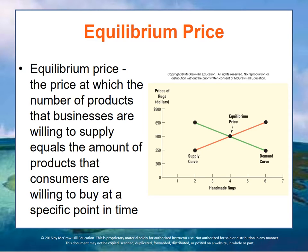A company that sells rugs may be willing to sell six at $650 each, four at $500 each, but just two at $350. The relationship between the price of rugs and the quantity of rugs that the company is willing to supply and sell is shown here as the supply curve — that's the red curve on the graph.